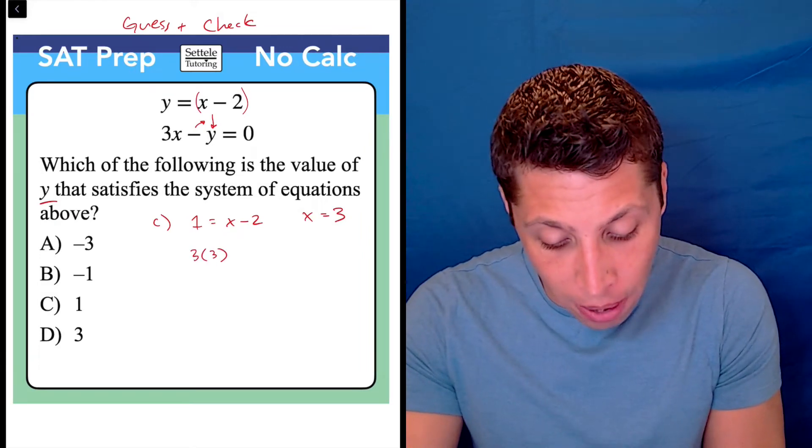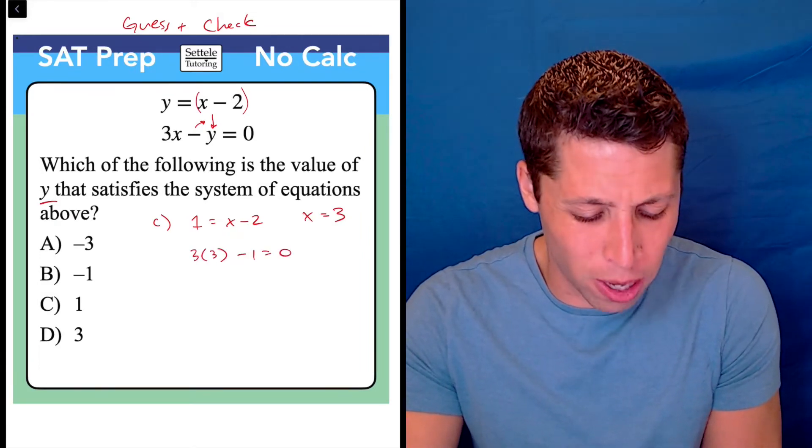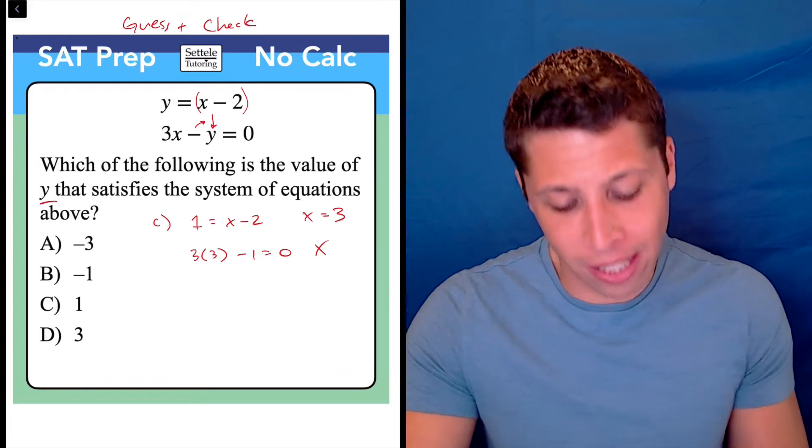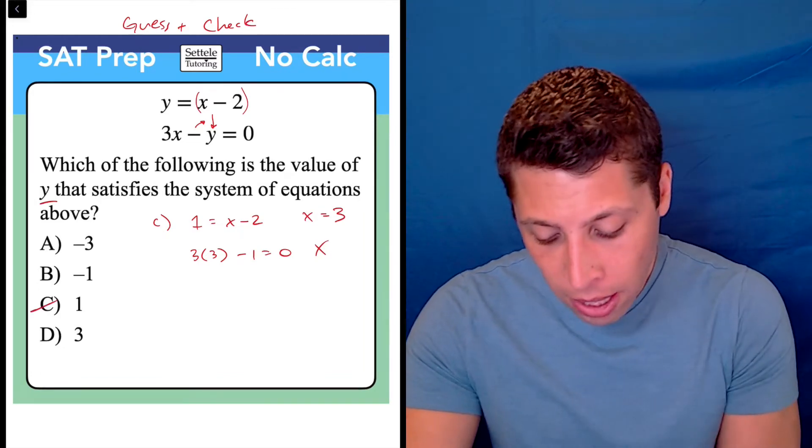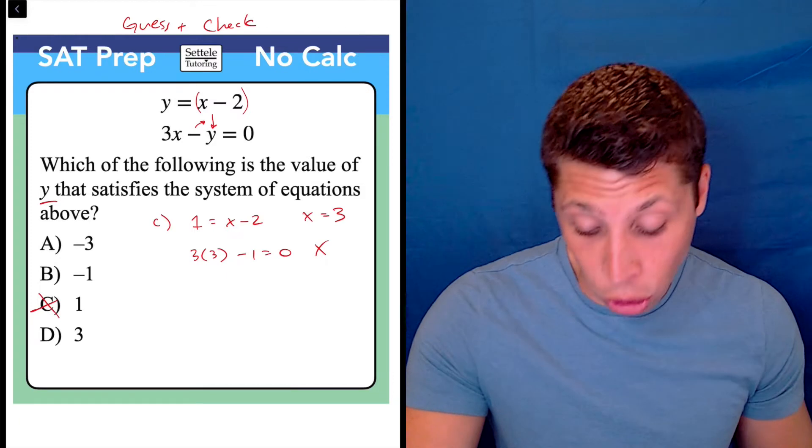and then we could check that in the bottom equation. 3 times 3 minus 1 equals 0, no, that doesn't make any sense. That's just wrong, right? 9 minus 1 is not 0. So we could do this, and we could continue through the choices.